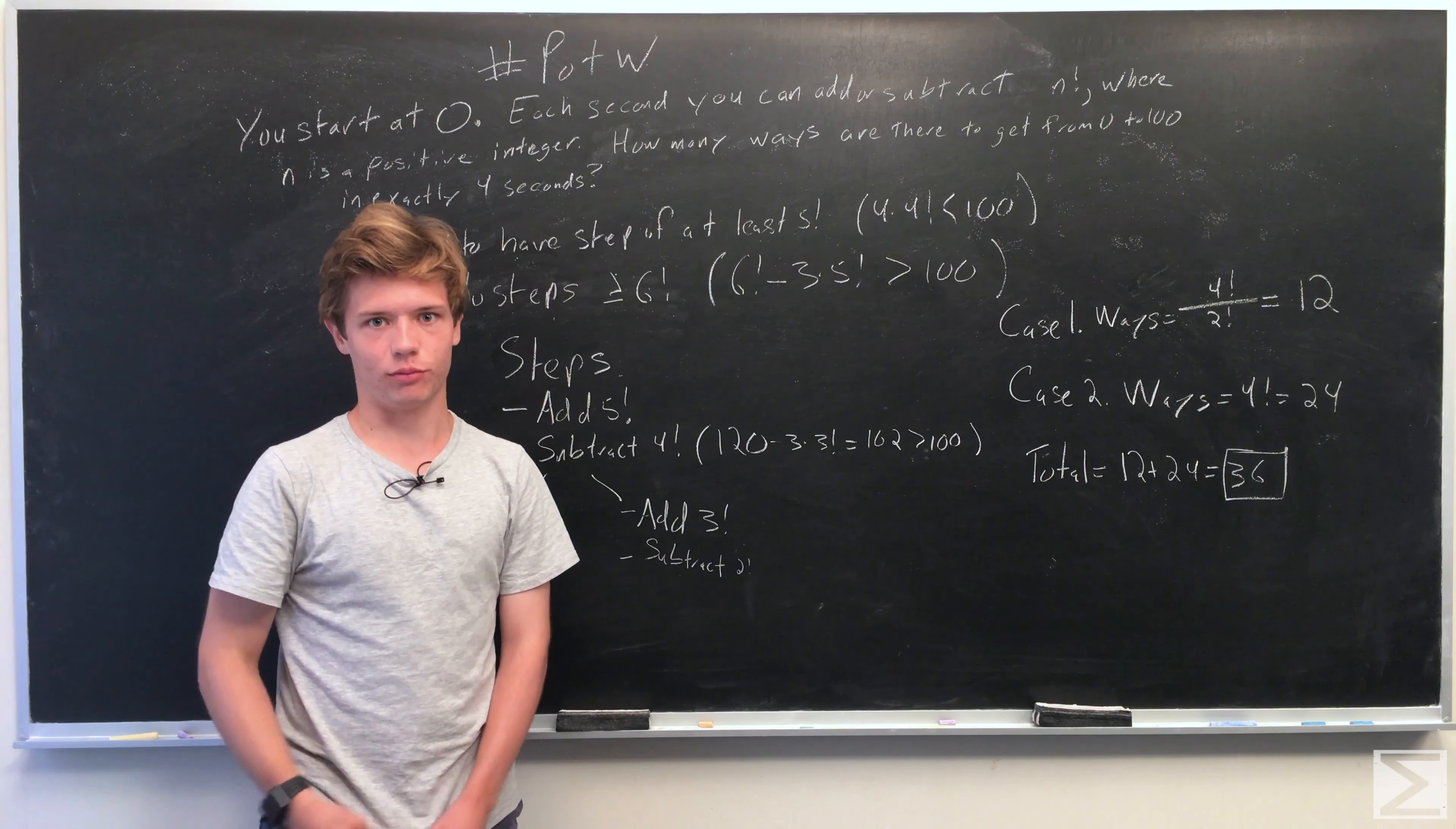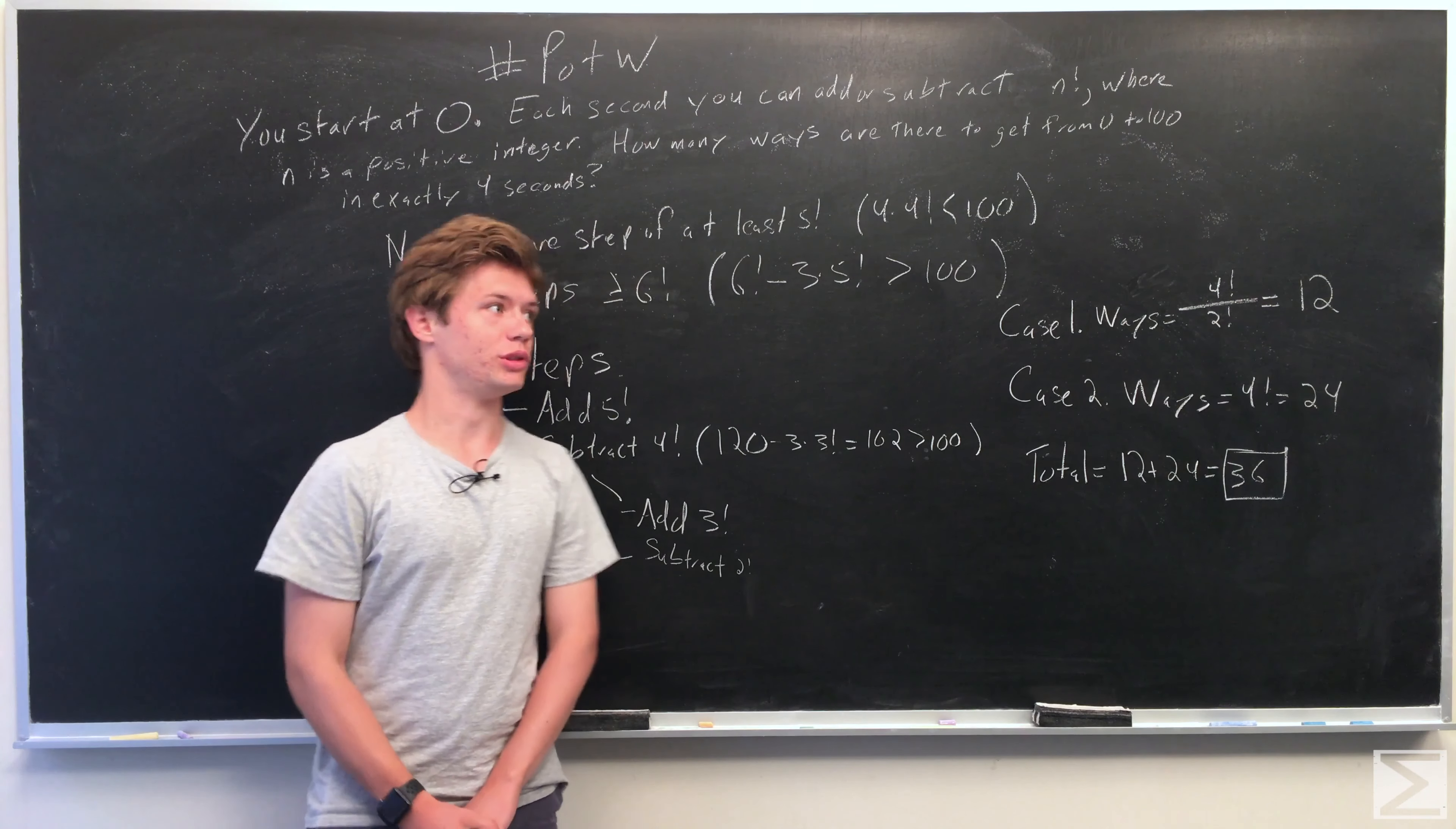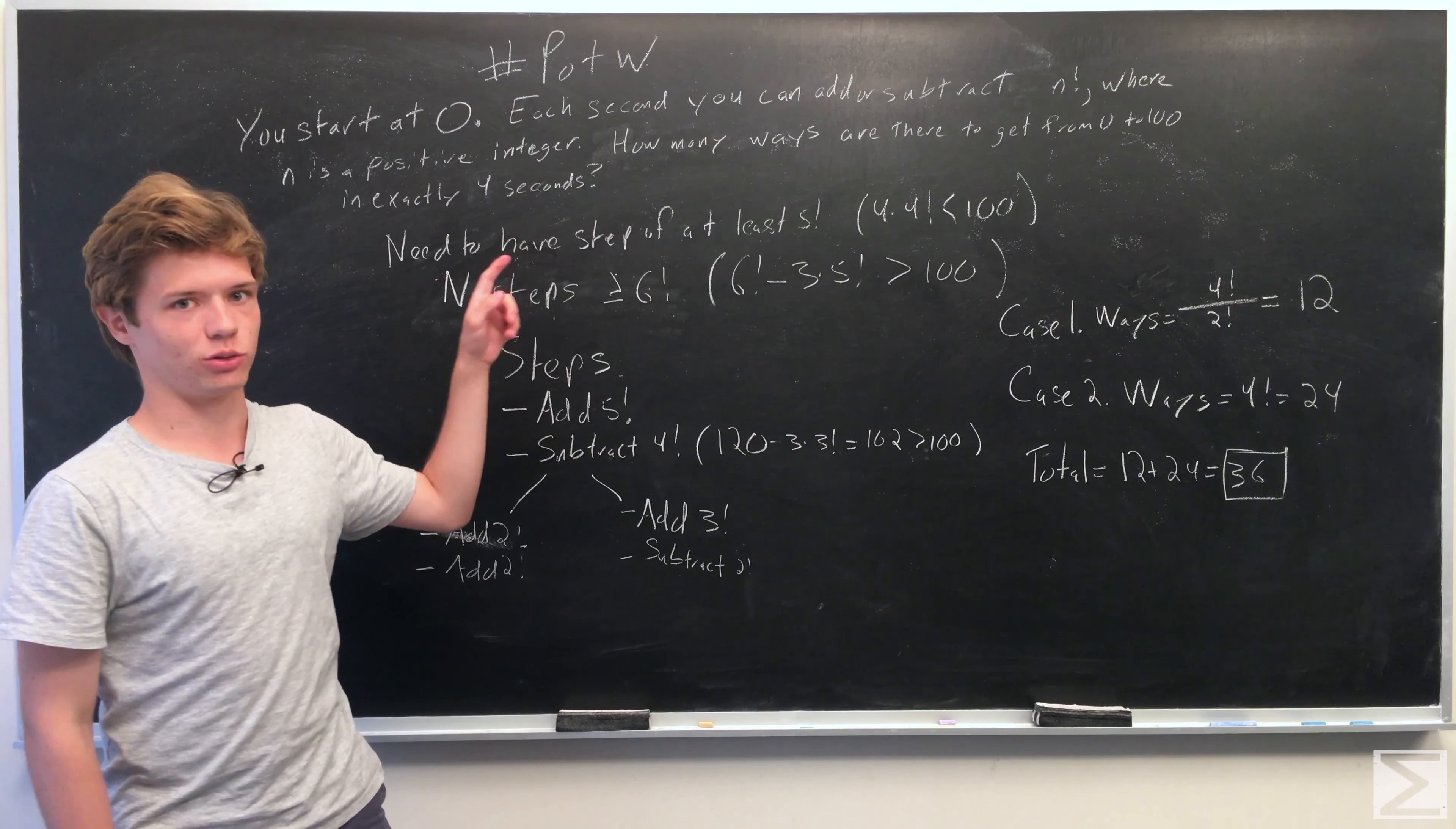...we won't be able to get to 100 because 4 times 4 factorial equals 96, and that is less than 100. So one of the steps has to be at least 5 factorial.